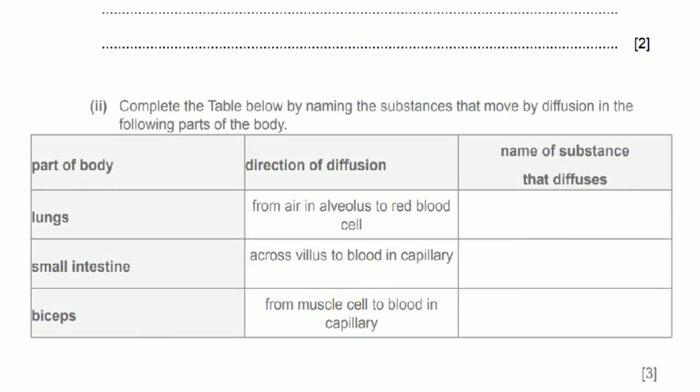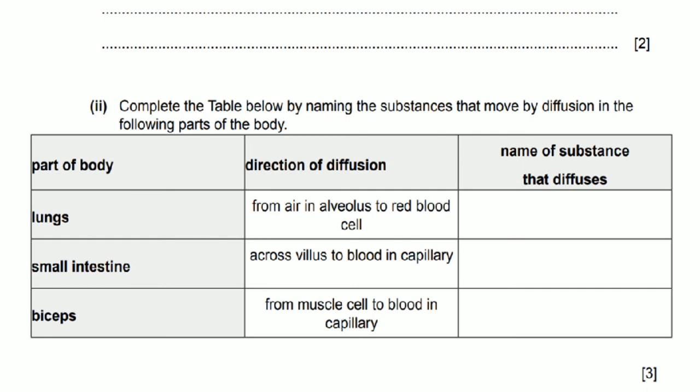The last question for this video gives us a part of the body and then the direction of diffusion. The first one is the lungs and it says from the air in the alveolus to the red blood cells. Well this is either oxygen or carbon dioxide. Because it's from the alveolus to the red blood cell it has to be oxygen.